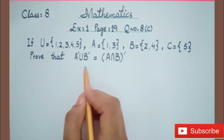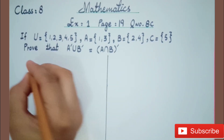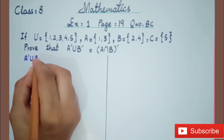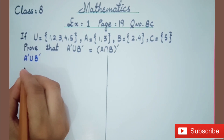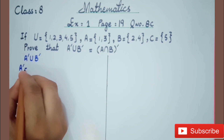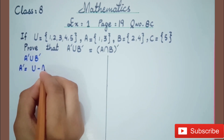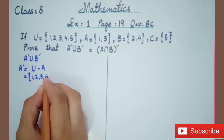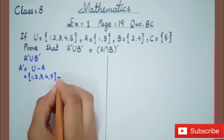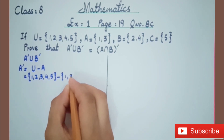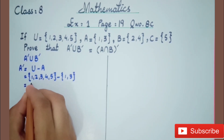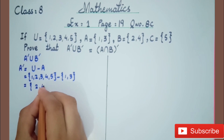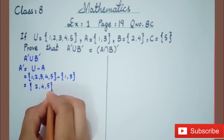Let's check it. We will solve the left-hand side first. The left-hand side is A complement union B complement. First we find A complement: A complement equals universal set minus A. The universal set is {1, 2, 3, 4, 5} minus set A which is {1, 3}. The answer of A complement is {2, 4, 5}.